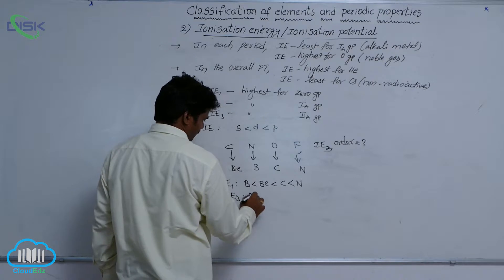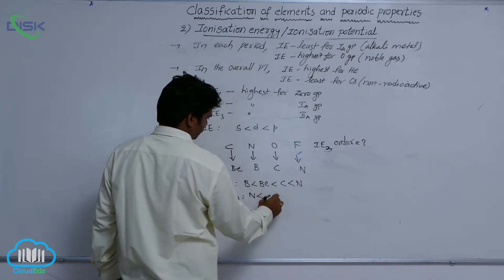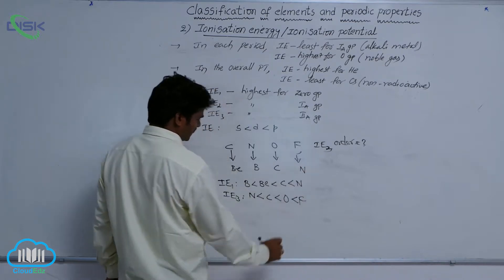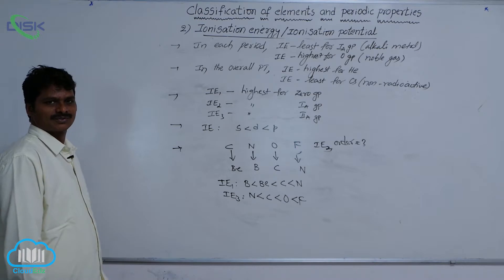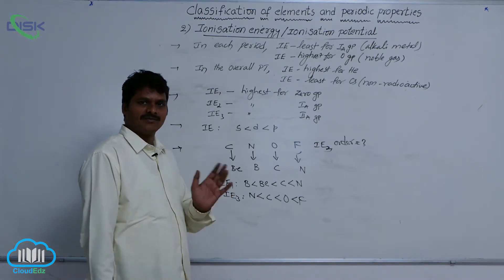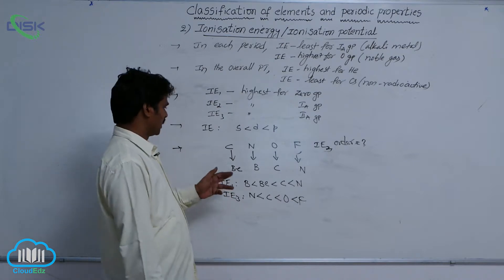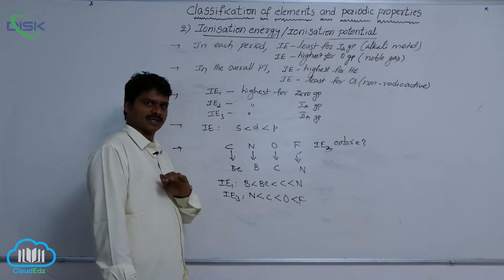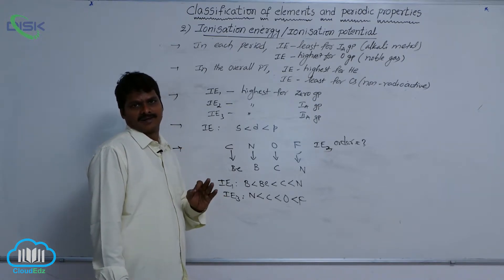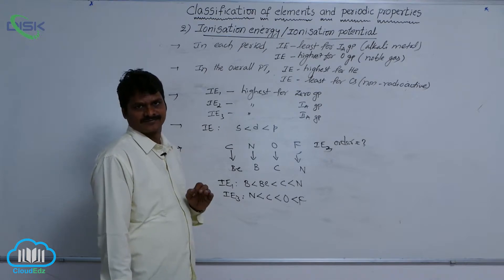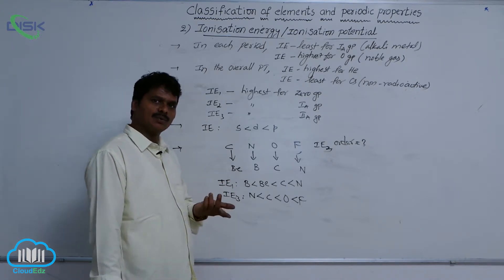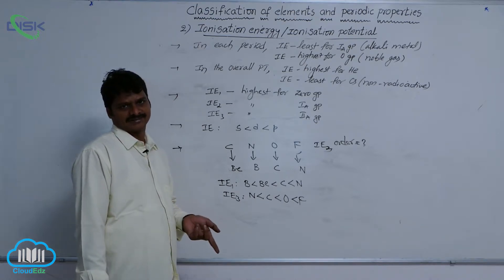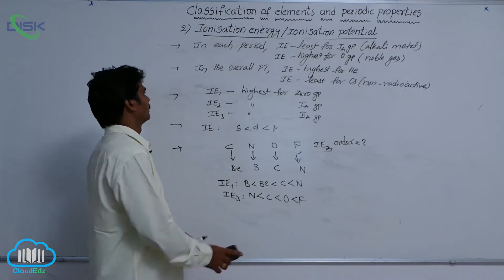So write nitrogen in place of boron, beryllium in place of carbon, carbon in place of oxygen, nitrogen in place of fluorine — this gives the IE3 order. In that way we can determine IE1, IE2, IE3. First you have to remember the IE1 order for second period or third period elements, then you can answer IE2 or IE3.